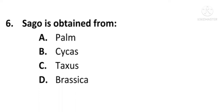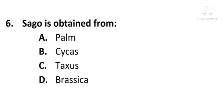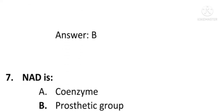Next question: Sagu is obtained from — A) Palm, B) Cycas, C) Taxus, or D) Brassica. The correct answer is B, Cycas. Sagu is obtained from Cycas; B is the correct option.